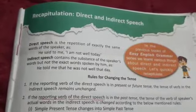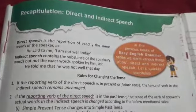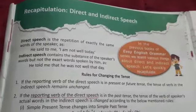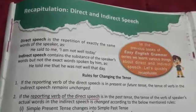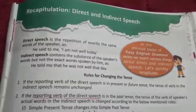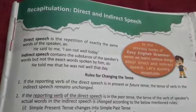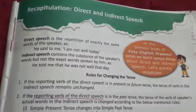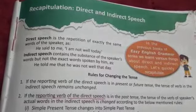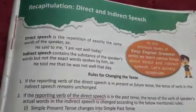So now what is direct speech? Direct speech is the repetition of exactly the same words of the speaker. Suppose I am saying, 'Students, submit your copies tomorrow.' You are saying to your parents or to your friends — those who are absent — I am saying, 'Submit your copies tomorrow.' When you are repeating the exact words of the speaker, we call it direct speech.